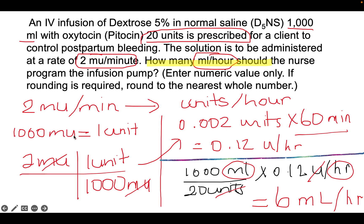We know that 1000 milli-units equals one unit, so 2 milli-units over 1000 milli-units gives us 0.002 units. To convert minutes to hours, we multiply by 60 minutes, giving 0.12 units per hour. Now we take 1000 ml over the 20 units prescribed, multiply by 0.12 units per hour — the units cancel and we end up with 6 ml per hour. If you got 6 ml per hour, you are correct.